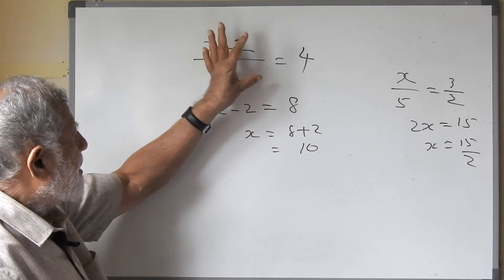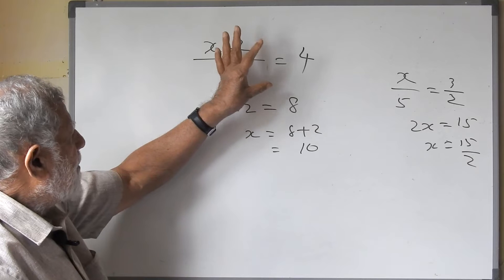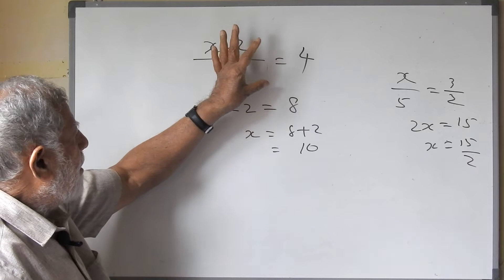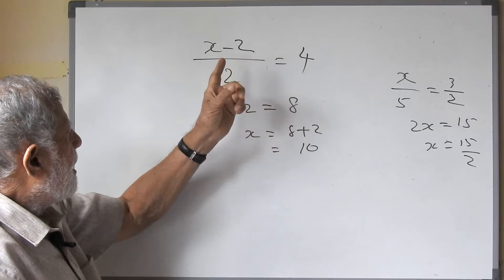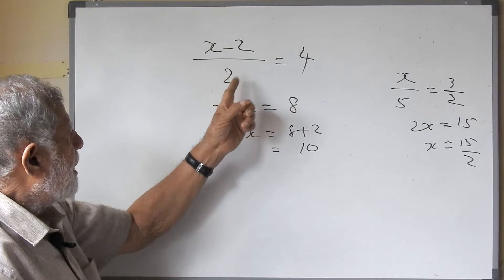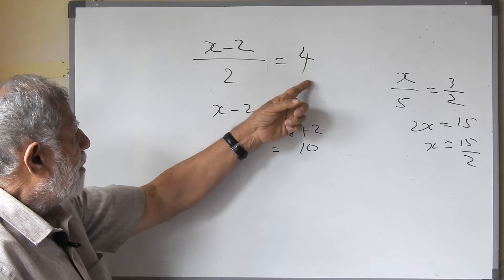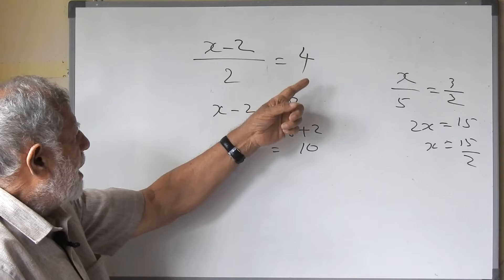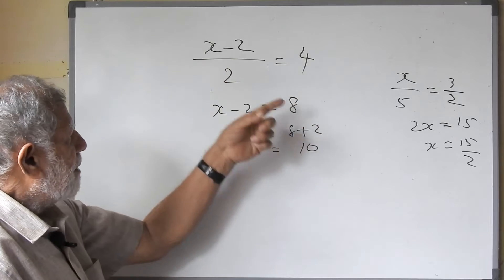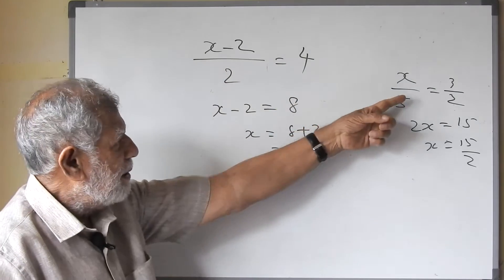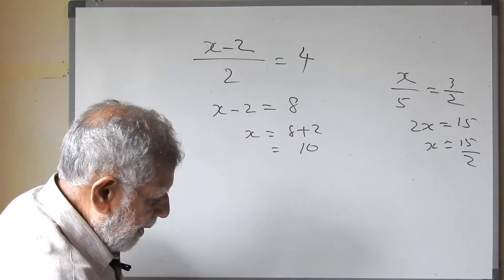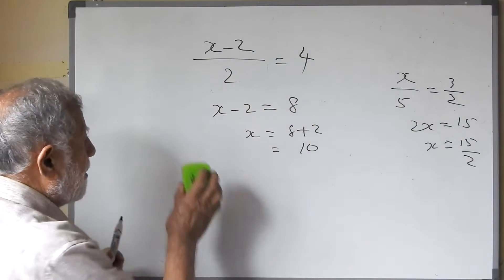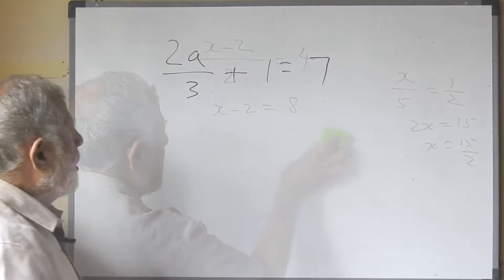So what you have here is a fraction — numerator and denominator on one side, and 1 on the other. So we cross-multiply. It is similar to the previous example. We will take another example.